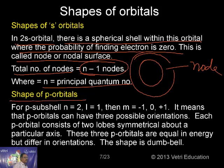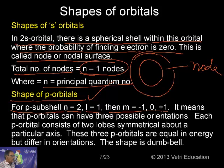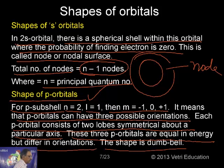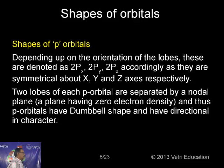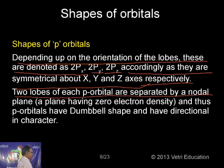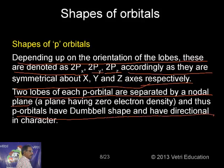The 3 p orbitals are equal in energy but have different orientations. The shape is dumbbell. Depending on the orientation of the lobes, they are denoted as 2px, 2py, and 2pz, symmetrical about the x, y, and z axes respectively. The 2 lobes of each p orbital are separated by a nodal plane — a plane of zero electron density. Thus p orbitals have a dumbbell shape and are directional in character.